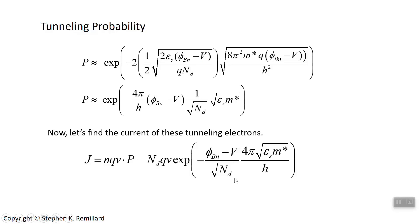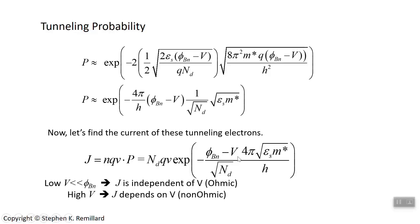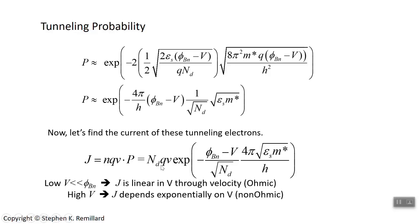Let's look at how the current depends on voltage and on doping. At low voltage, V is a very small number overshadowed by the Schottky barrier potential, so voltage basically disappears from the exponential. Current depends linearly on voltage through the velocity only — it is ohmic. At high voltage, current has a complex exponential dependence on voltage — clearly non-ohmic or non-linear. So this metal–heavily-doped semiconductor junction behaves like a normal conductor at low voltage (ohmic), and is non-ohmic at high voltage. It operates as an ohmic contact at low voltage.